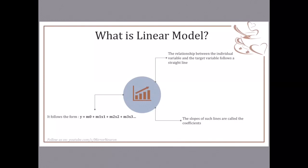The slopes of such lines are called the coefficients, and it follows the form which looks something like this: y equals an intercept term plus the slope times variable 1 plus slope times variable 2 and slope times variable 3. This is a standard linear model and how it looks.